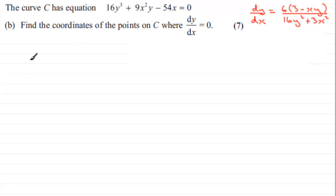First of all, when dy/dx equals zero, it must mean that the numerator here must equal zero, because zero divided by anything is going to give us zero. So that means 6 multiplied by (3 minus xy) has got to equal zero. If you factorize it, then this factor here must be equivalent to zero. Six obviously can't be zero, so 3 minus xy must equal zero.